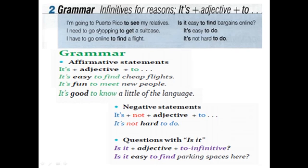'I need to go shopping to get a suitcase' — why do I need to go shopping? The reason is: to get a suitcase — للحصول على أو لشراء حقيبة. 'I have to go online' — why? To find a flight — To find: فعل infinitive مجرد. So the infinitive is used to give the reason — لإعطاء الأسباب.